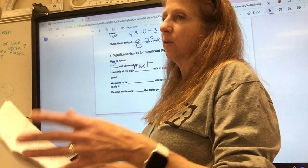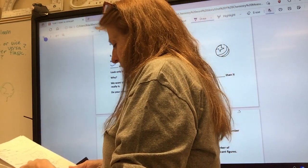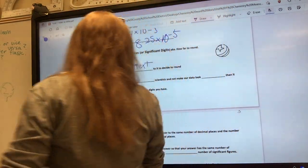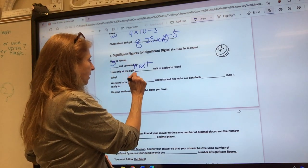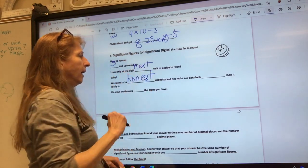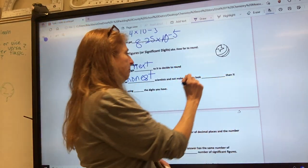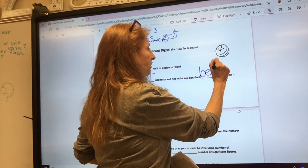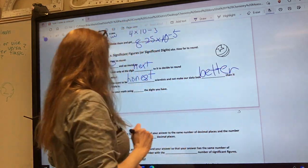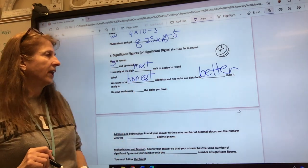Why do we want to round correctly? We want to be honest scientists and not make our data look better than it really is. So, this is how you do it.